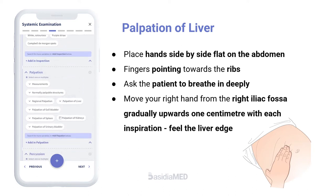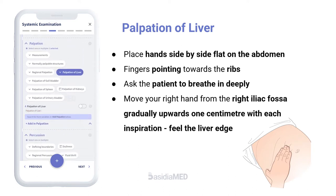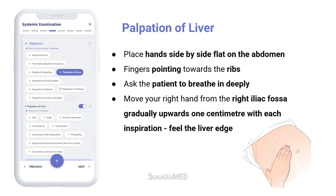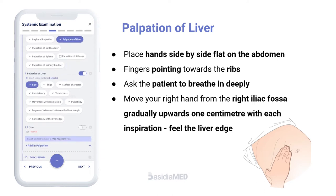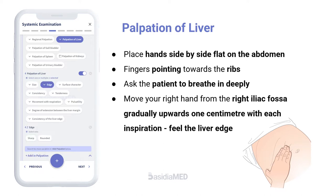Palpation of the Liver. Place the hand flat on the abdomen with fingers pointing upwards. Ask the patient to breathe in deeply. Move your right hand from the right iliac fossa gradually upwards one centimeter with each inspiration until a sense of increased resistance is noted. Record the size of the liver as finger breadth or centimeters below the right costal margin in the midclavicular line. Locate the liver edge by the fingertips.